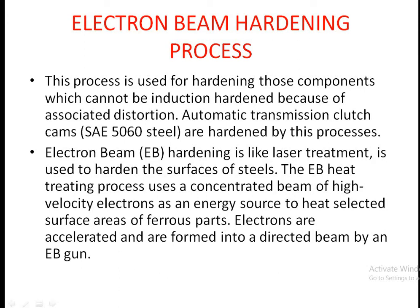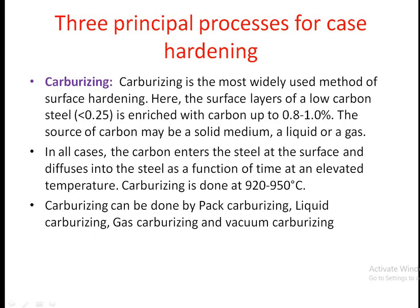Electron beam hardening is similar to laser treatment and is used to harden the surface of steels. This process uses a concentrated beam of high-velocity electrons as an energy source to heat selected surface areas of ferrous parts. The electrons are accelerated and formed into a directed beam by an electron beam gun.